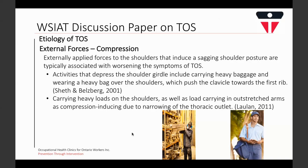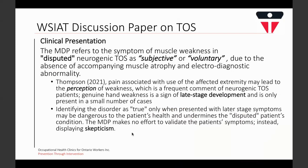With respect to clinical presentation, the discussion paper refers to symptoms of muscle weakness in disputed neurogenic TOS as subjective or voluntary due to the absence of accompanying muscle atrophy or electrodiagnostic abnormality. However, Thompson recently published that pain associated with the affected extremity may lead to the perception of weakness, which is a frequent component of neurogenic TOS. Genuine hand weakness is a sign of late-stage development, present in only a small number of cases. Identifying the disorder as true only when late-stage symptoms are present is dangerous to a patient's health and undermines the patient's condition.